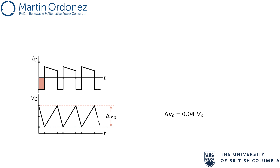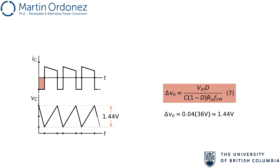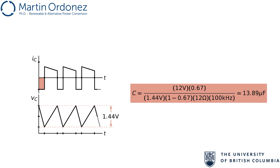The voltage ripple in the capacitor is limited to plus or minus 2%, or 4% total, of the average output voltage, that is 1.44 volts. Using the capacitor voltage ripple equation, solving for the capacitor value, and plugging in the known values — input voltage 12 volts, duty cycle 0.67, desired output voltage ripple 1.44 volts, load resistance 12 ohms, and switching frequency 100 kHz — gives the required capacitor value of 13.89 microfarads.